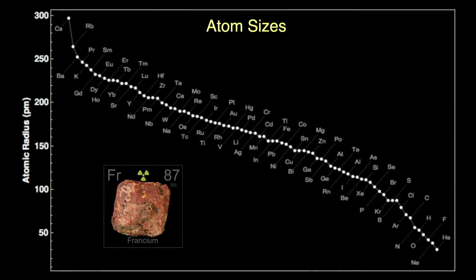Looking at all the element atom sizes, here we see them sorted from largest, cesium, at the top left, to the smallest, helium, on the bottom right. Francium is probably up at the top, maybe even above cesium, but we're just not sure of that.